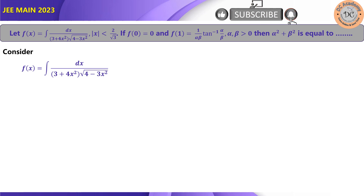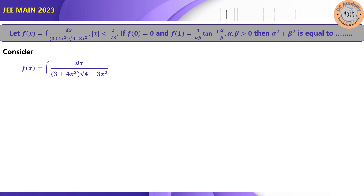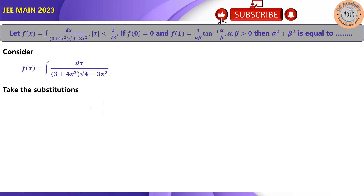We need to rewrite the integrand somehow in the form of 1 + x² or 1 + (some function of x)², so that tan⁻¹(x) or something similar will come into the picture. That's why first we take the substitution x = 1/t.